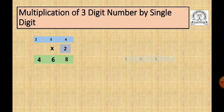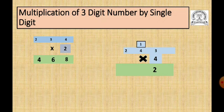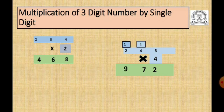Now we will do one more problem — multiplication with carry. We take the question 243 multiplied by 4. Here 4 is the multiplier. We read the 4 times table. 4 threes are 12. In 12, we write 2 down and carry 1 to the tens place. Now multiply 4 fours, which are 16. To this 16 we add the carry: 16 plus 1 is equal to 17. We write 7 down and carry 1 to the hundreds place. 4 twos are 8, and 8 plus 1 is equal to 9. The product of 243 multiplied by 4 is 972.